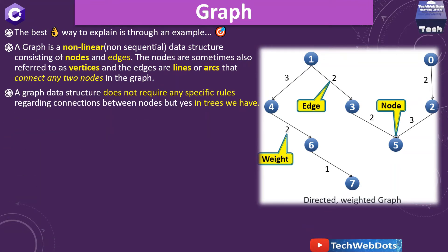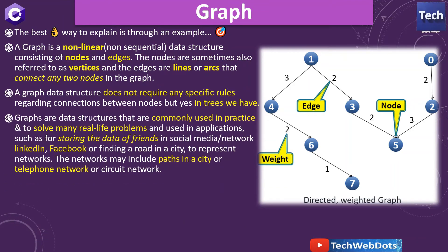Now a graph data structure does not require any specific rule regarding connections between nodes, but yes in trees we have. So I am talking about the rule between nodes. There is no specific rule in graph but in trees we have. But tree is not in the scope of this section, so let's focus on graph only.